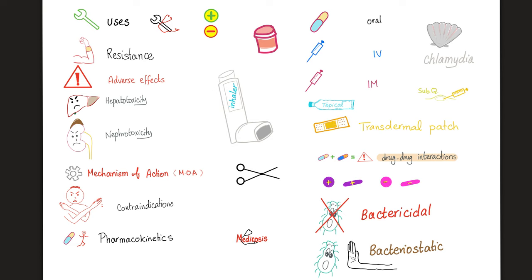This sad liver means that the medication is toxic to the liver, or hepatotoxic. This sad kidney means the medication is nephrotoxic. This gear represents the mechanism of action of the medication. This symbol means contraindications of the medication. This running figure represents pharmacokinetics — motion. This is an oral pill or tablet. This is intravenous. This is intramuscular. This is subcutaneous. This is topical. This is a transdermal patch. Drug plus drug equals danger — drug-drug interaction.